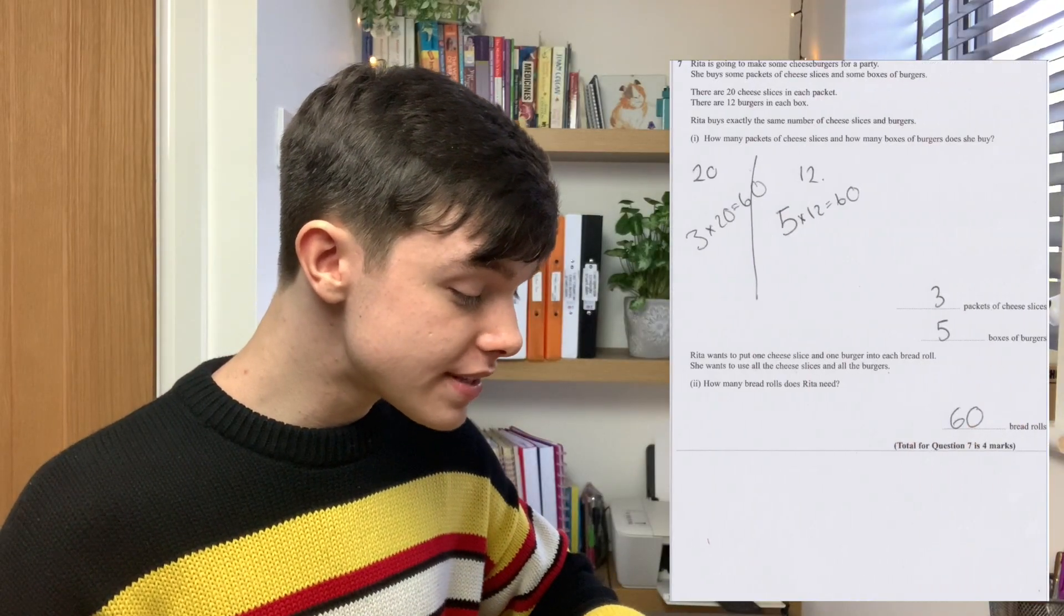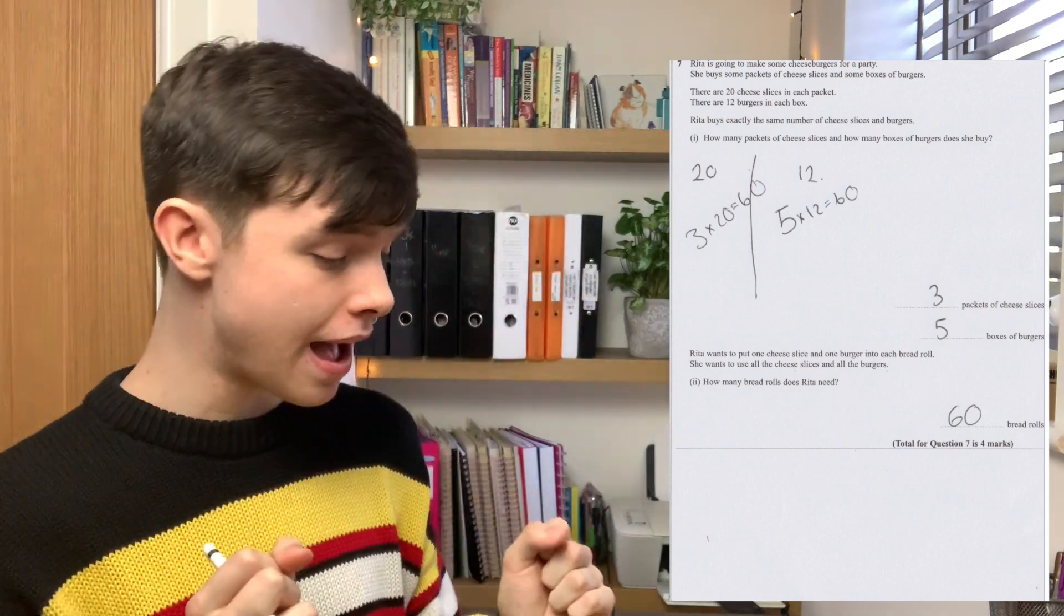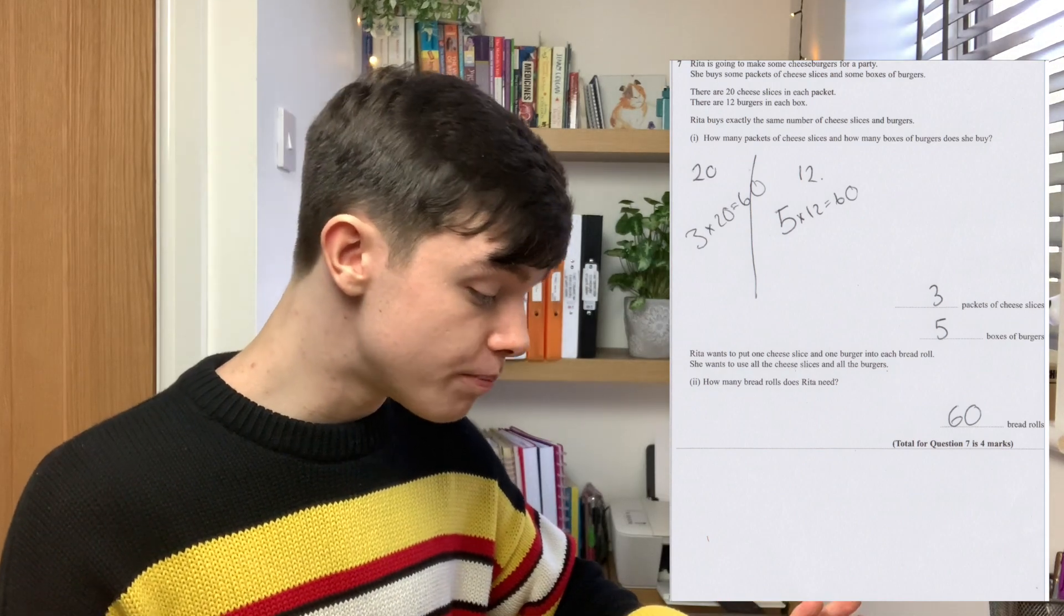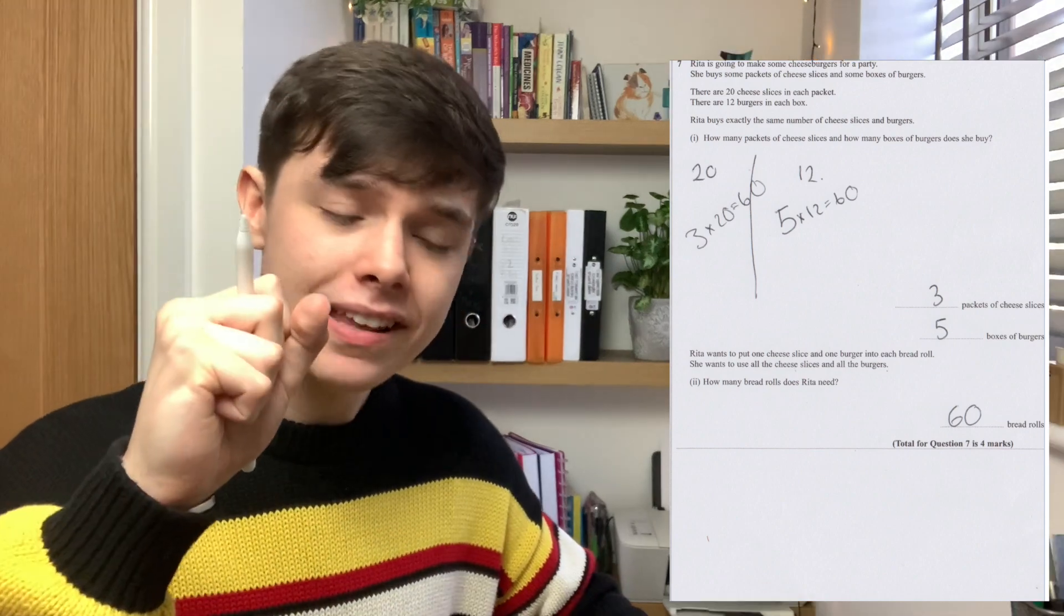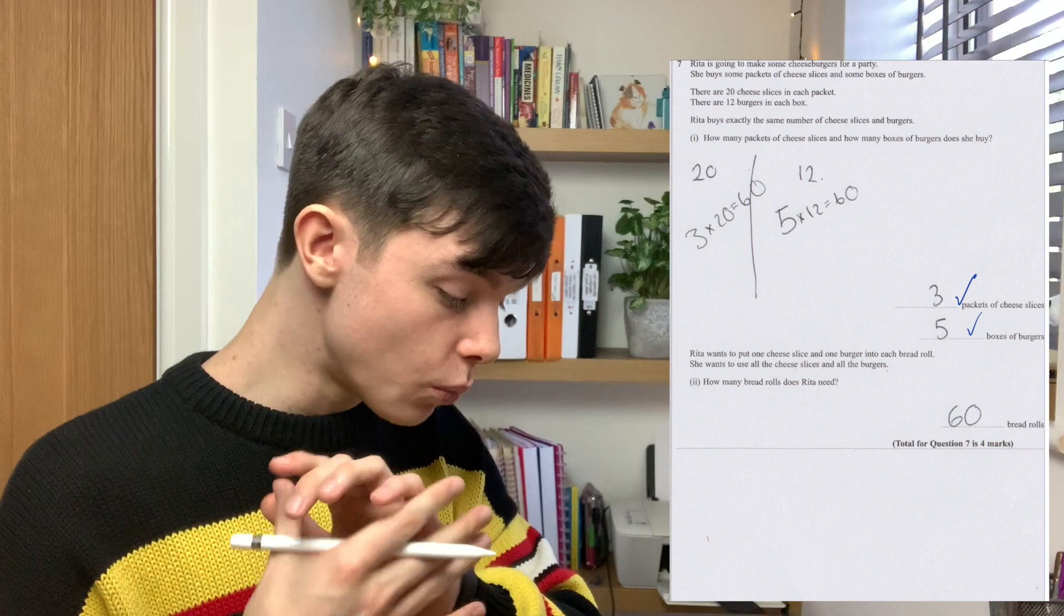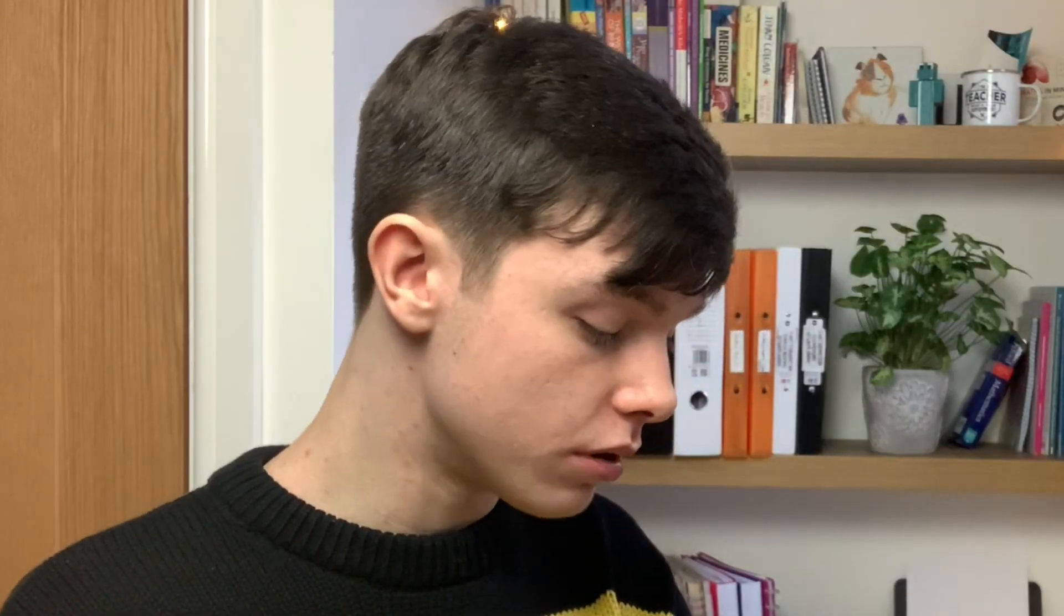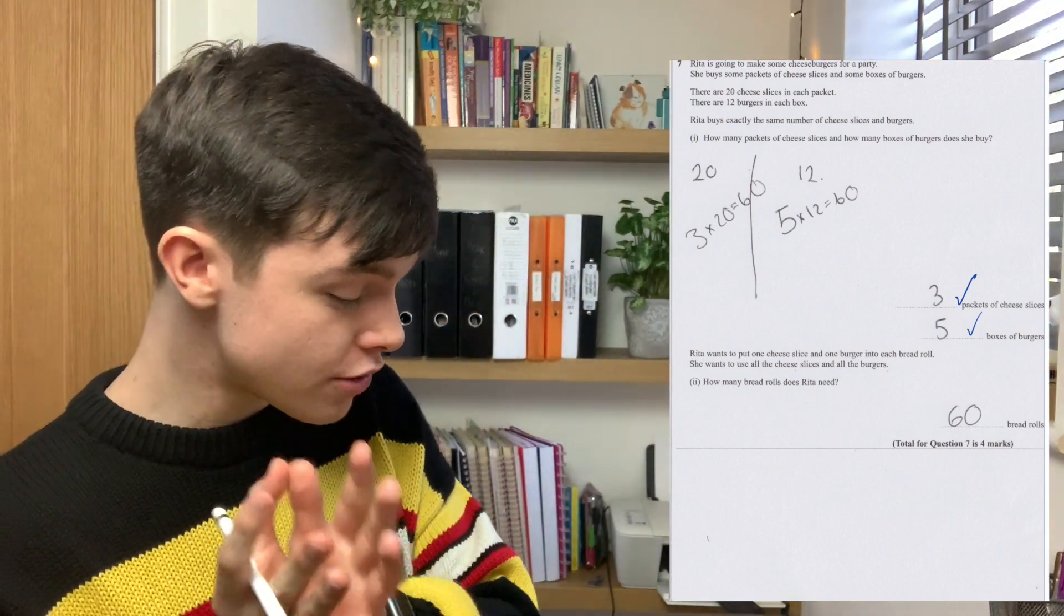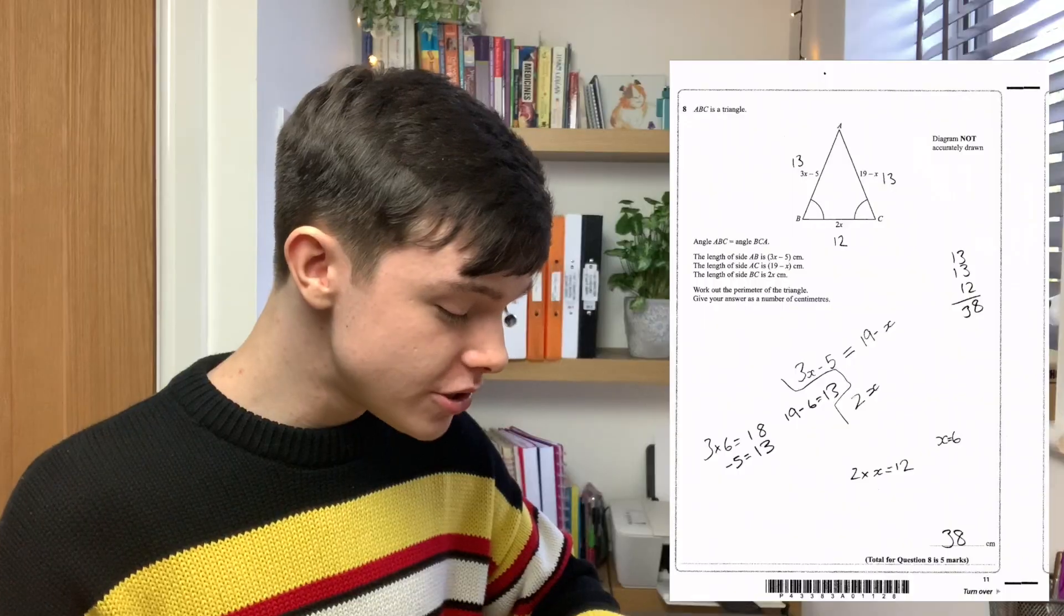Moving on to question seven. It says, Rita is going to make some cheeseburgers for a party. Go, Rita. She buys some packets of cheese slices and some box of burgers. Let's find out whether Rosie got the right answer. Yes, Rosie did. Then it says, Rita wants to put one cheese slice and one cheeseburger into each bread roll. Indeed, she needs 60. Four marks.